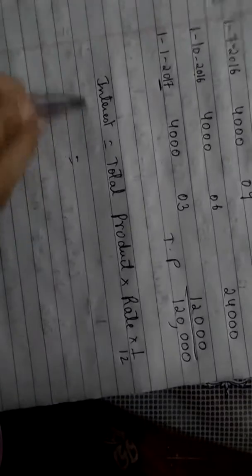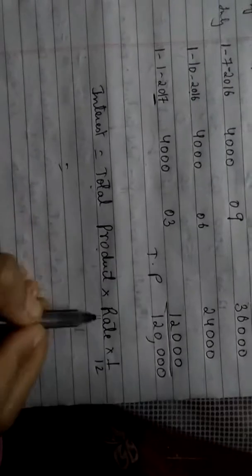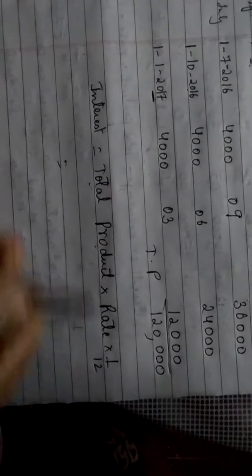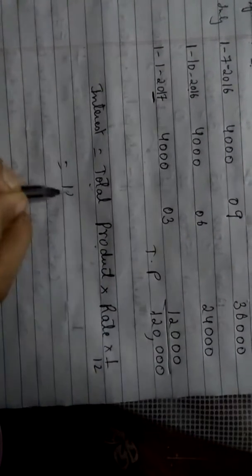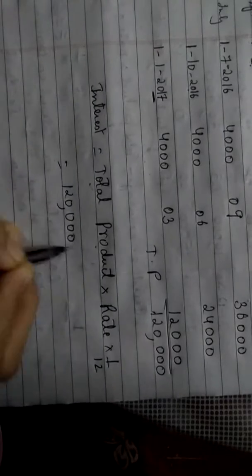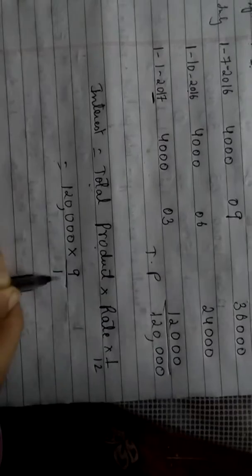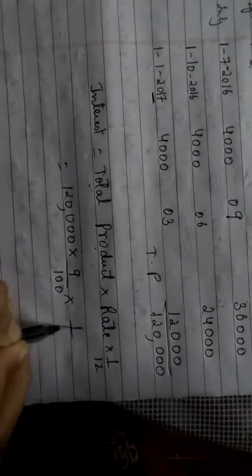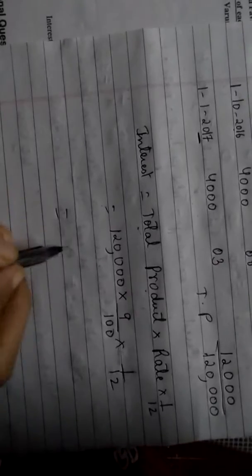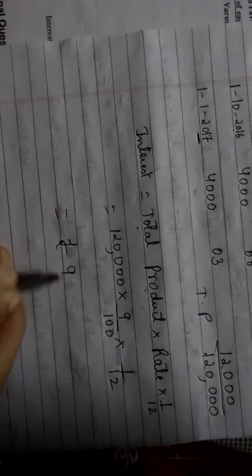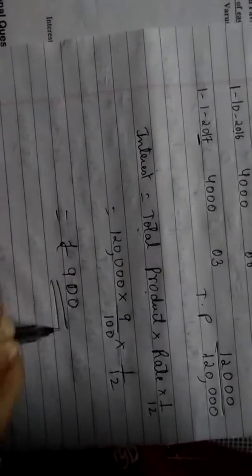Now use the formula. Interest equals total product into rate into 1 by 12. Total product is this - 1,20,000 into rate given in the question, 9% means 9 upon 100 into 1 by 12. Use your calculator. If you use your calculator, you will get rupees 900. This is the answer.